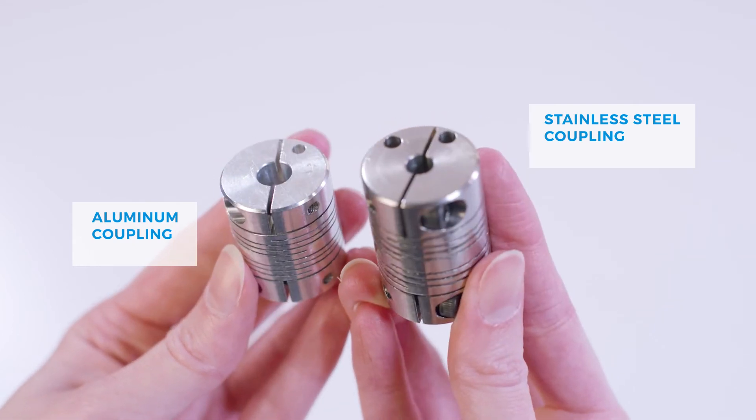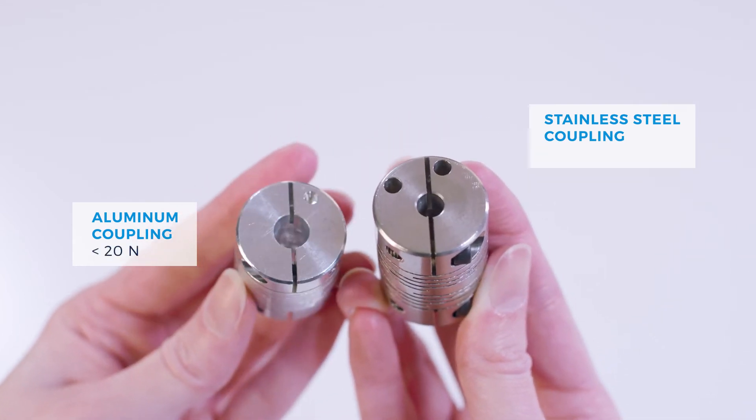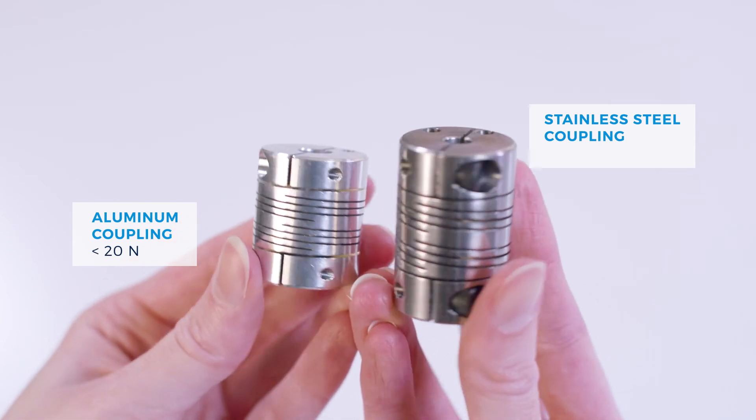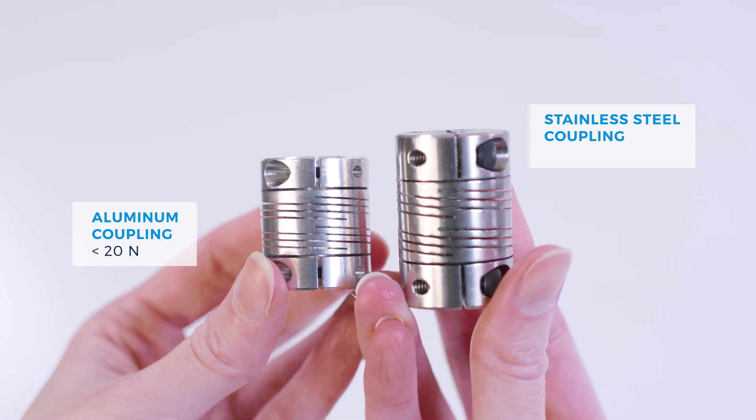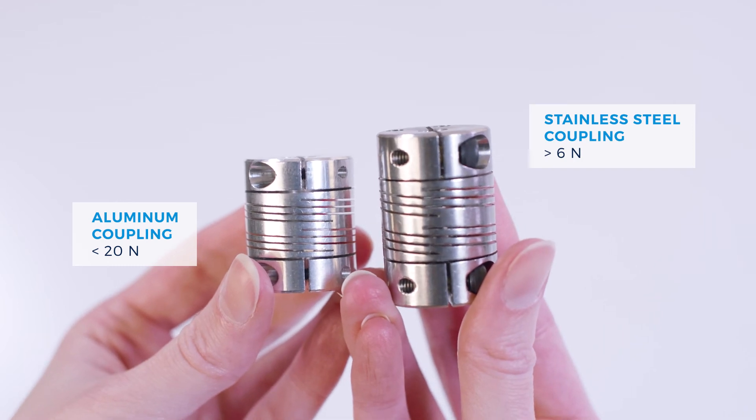In general, the aluminum coupling is commonly used for lower axial force testing, and the stainless steel coupling is used for higher axial force testing.